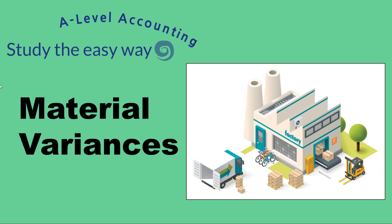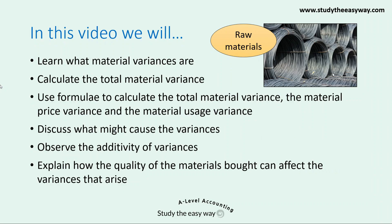In this variance analysis video, we'll be focusing on material variances. Material variances are linked to the use of raw materials in a manufacturing business. In this video, we'll be learning what material variances are, calculating the total material variance, and using formulae to calculate the total material variance, the material price variance, and the material usage variance. We'll discuss what might cause the variances, and then observe the additivity of variances. Finally, we'll explain how the quality of the raw materials bought can affect the variances that arise.